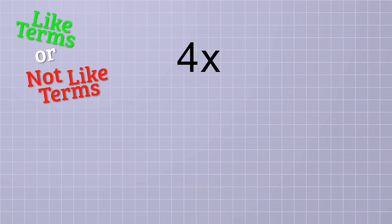Next up, we have 4x and 5y. Are these like terms? Well, they're both first degree terms, but since the variables are different letters, they are NOT like terms. That means we can't combine them.